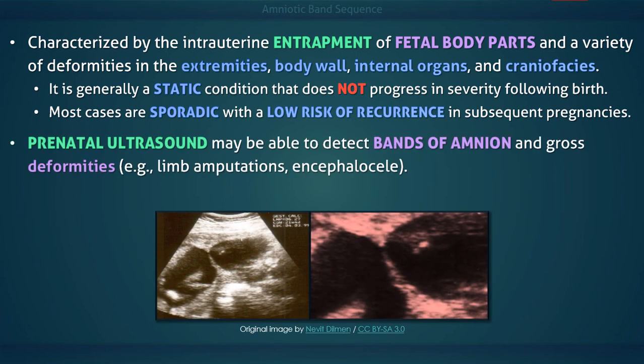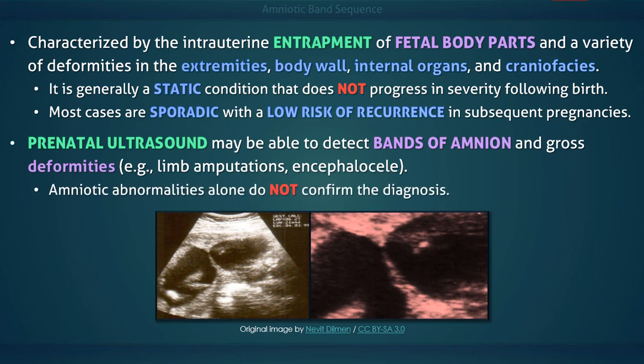It may be detected prenatally via ultrasound, which can reveal bands of amnion and characteristic defects. Amniotic abnormalities alone, however, do not establish the diagnosis, which cannot be made in the absence of fetal structure abnormalities or restricted movement. If severe constriction rings are detected on prenatal ultrasound, they may potentially be released via surgical lysis while in utero.